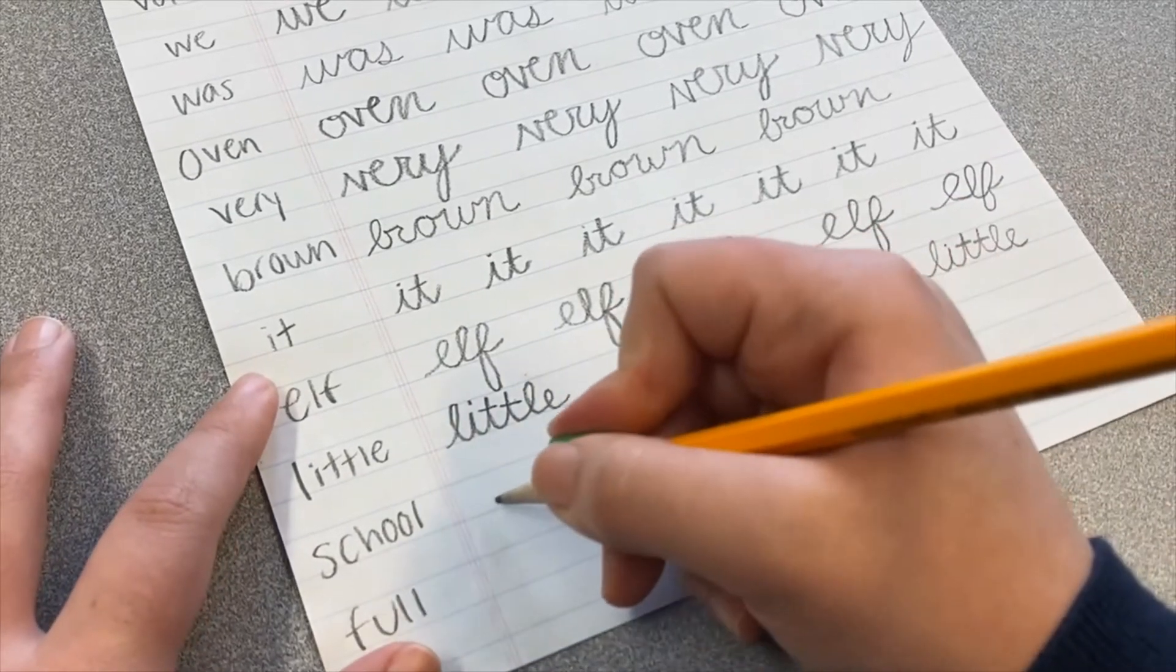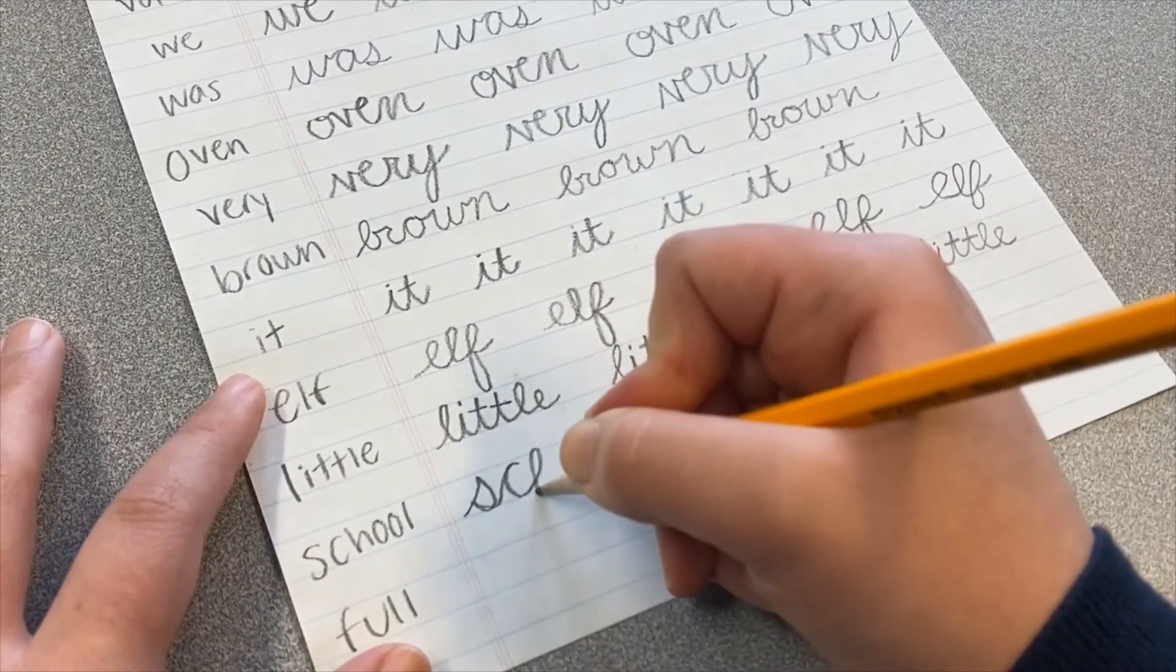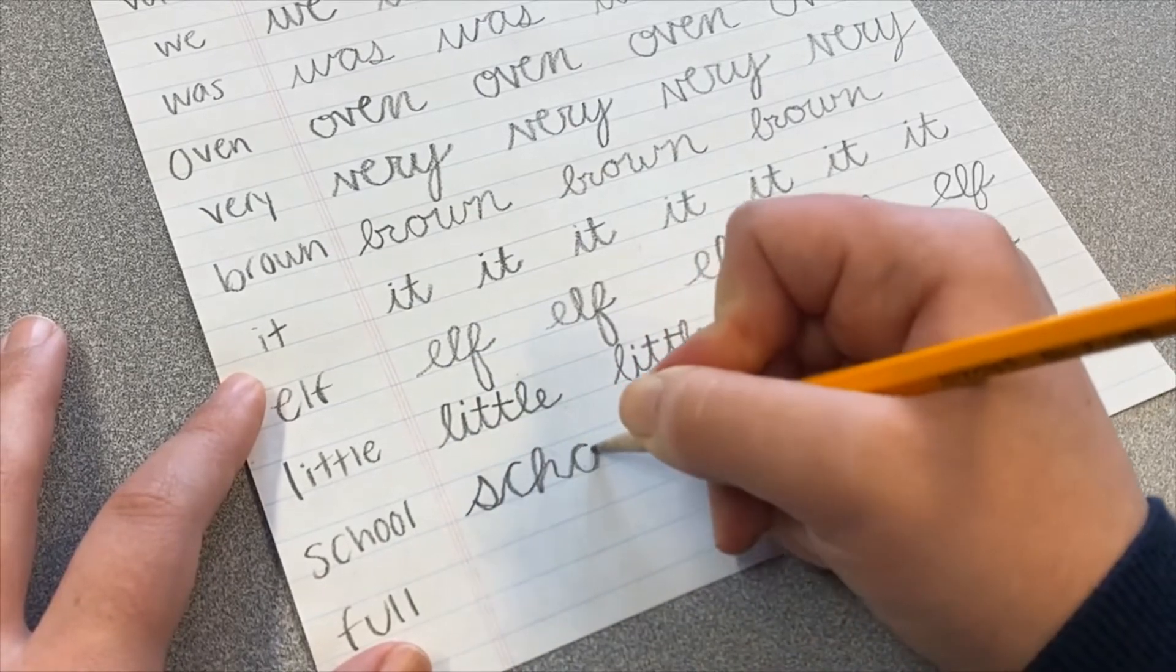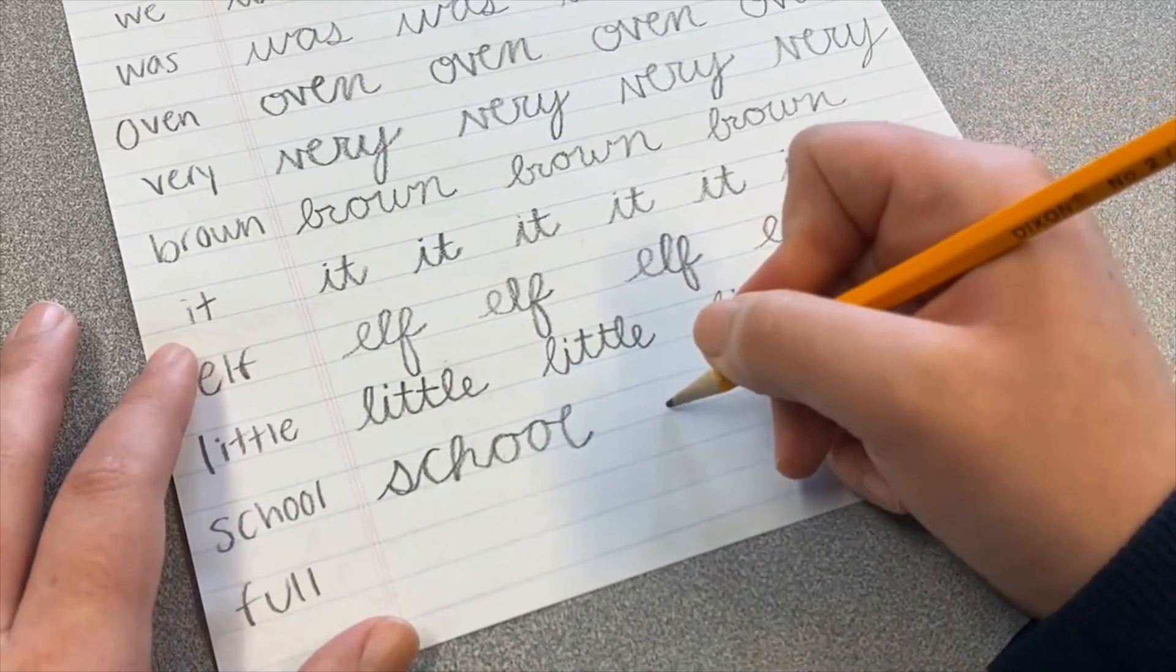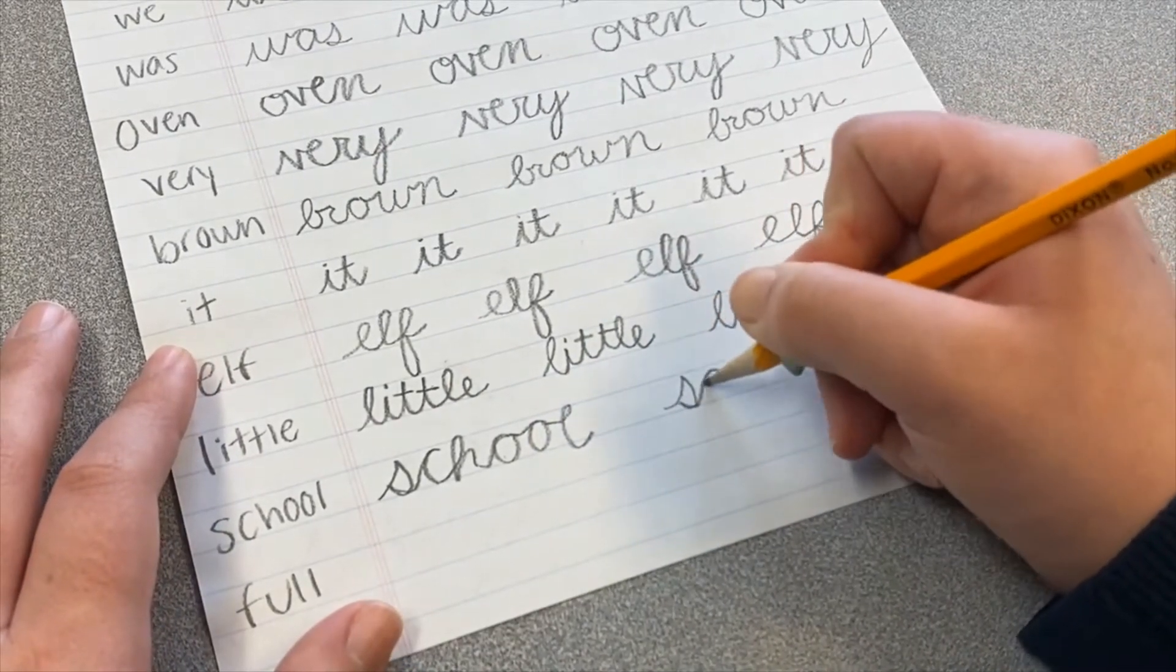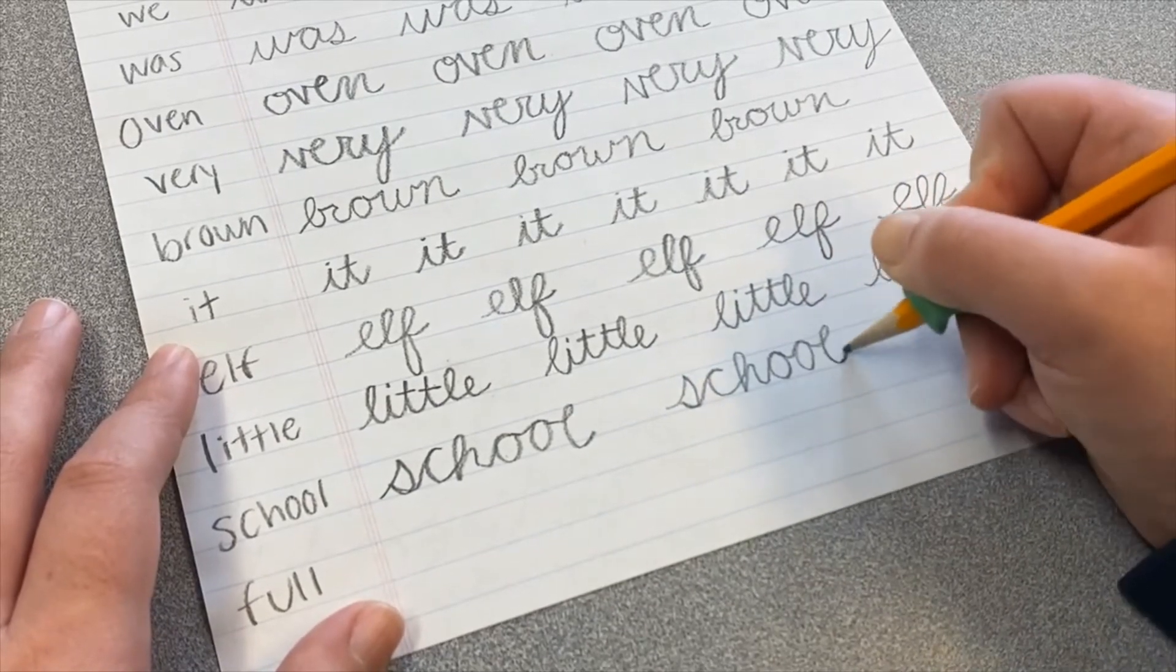The next word is school. We've got our sailboat S, C, looping H, O, O, L, school. S, C, H, O, O, L, school.